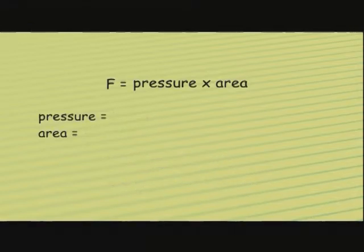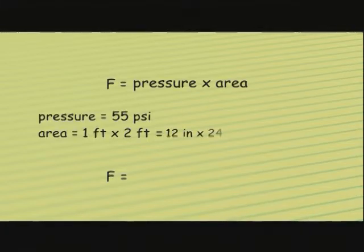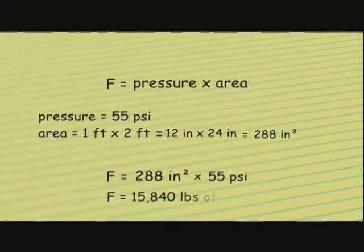Let's try another pressure calculation. If there was a pressure of 55 PSI on a surface that is 1 foot by 2 feet, what is the force on the surface? Keep in mind, the pressure is in units of PSI and the area is in units of feet, so we need to do a unit conversion of feet to inches. Our area is then 12 inches by 24 inches, or 288 square inches. Now we can take the area times 55 PSI pressure, and that gives us 15,840 pounds of force.